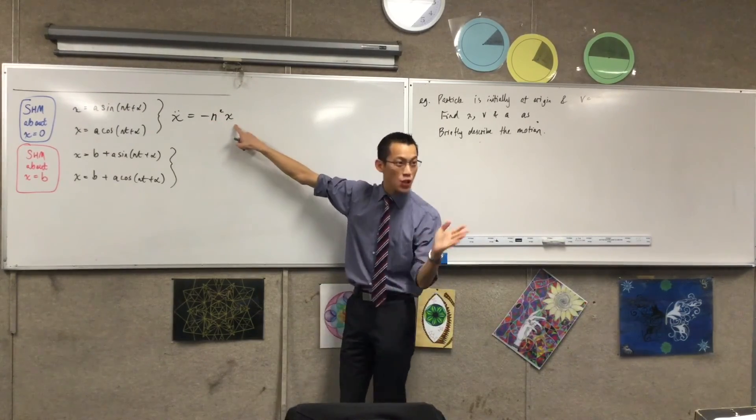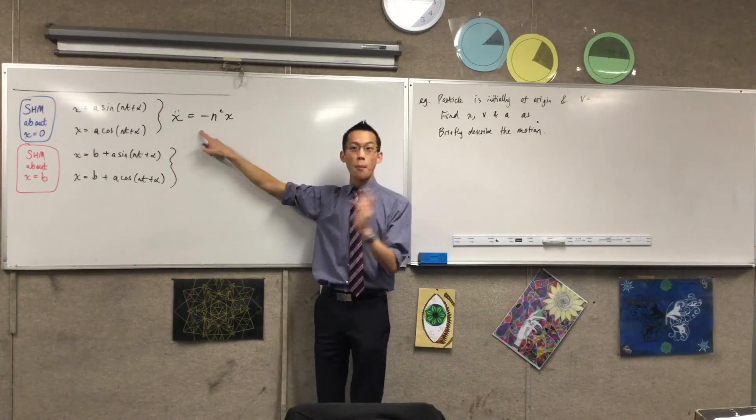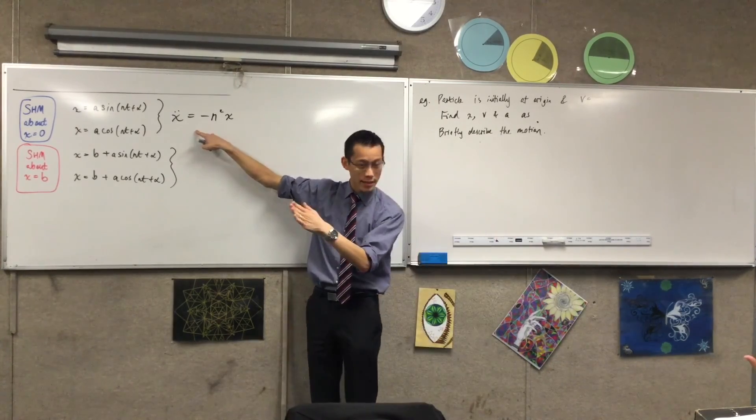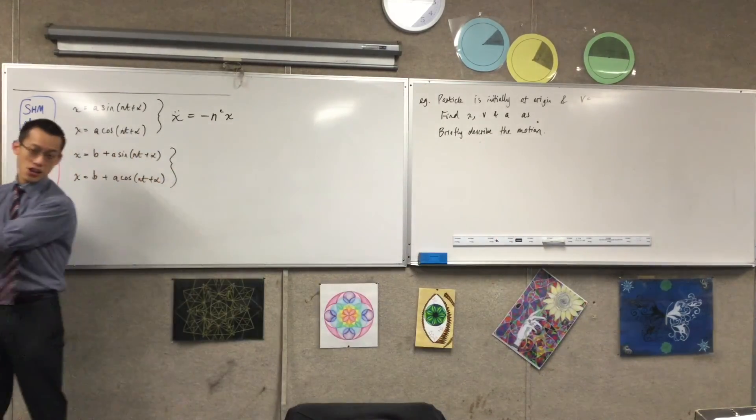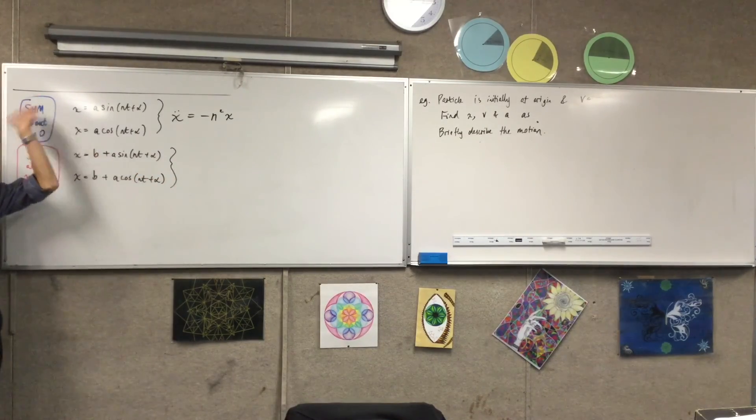so whichever side of the origin you are about, you're accelerating in the opposite direction. So if you're on the positive side, you're going to accelerate in the negative direction, which is what sends you back to the centre, and if you're on the negative side, you're accelerating back toward the positive side, which again, sends you back to the centre, which is what makes it simple harmonic motion.